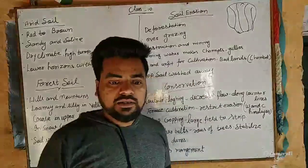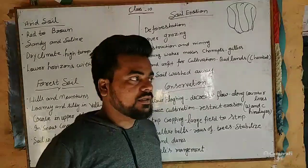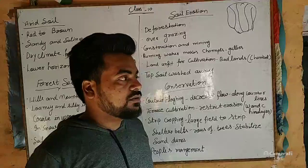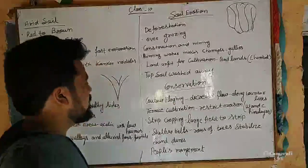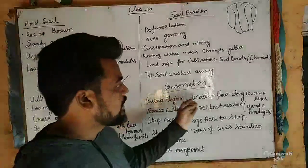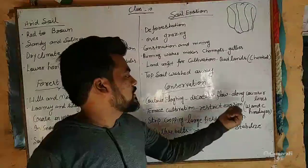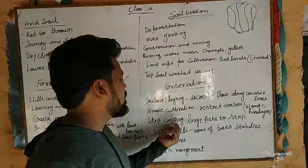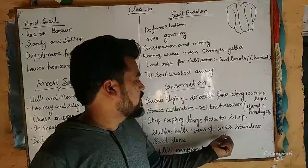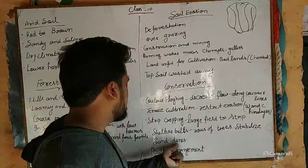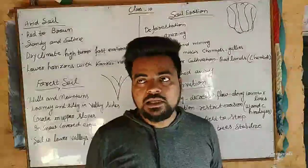Soil erosion affects the top fertile layer of the earth's crust. For conservation: contour plowing decreases flow, terrace cultivation restricts erosion, strip cropping uses large filter strips, shelter belts are rows of trees that stabilize sand dunes, along with afforestation and people's management.